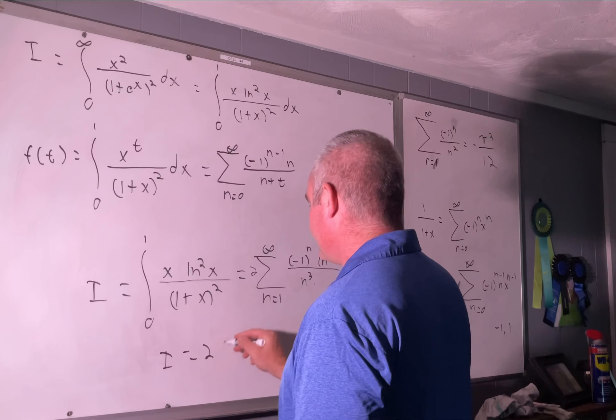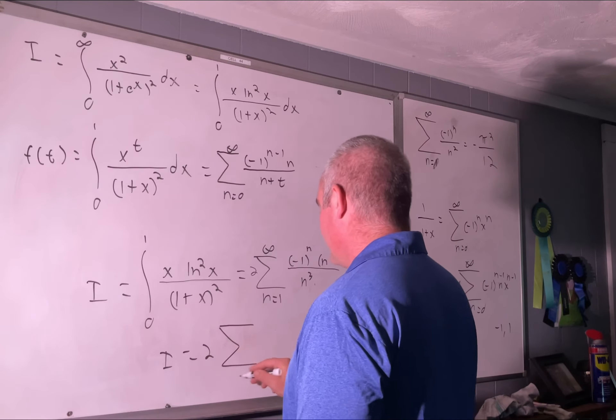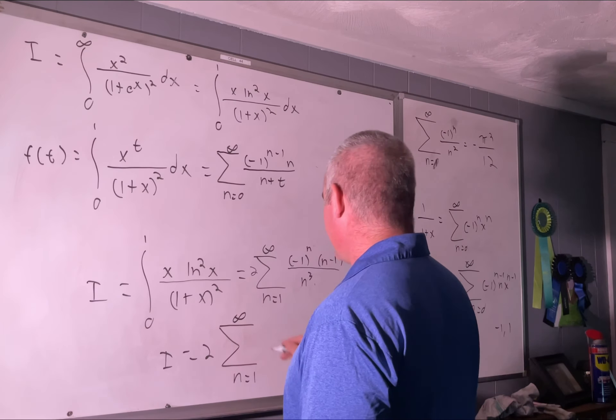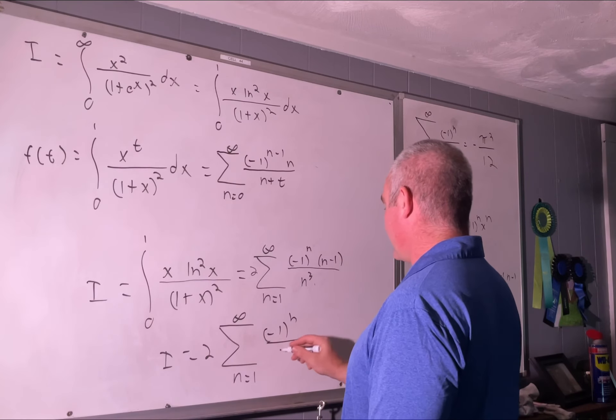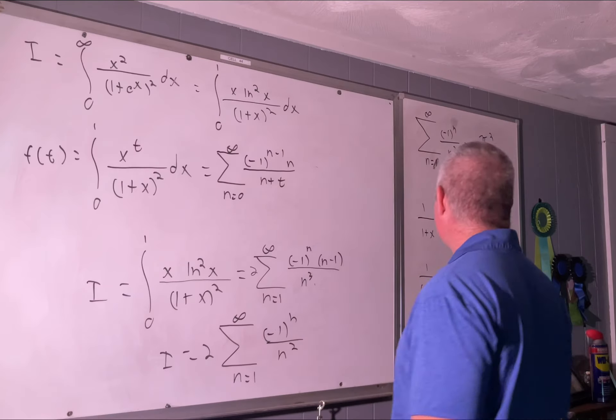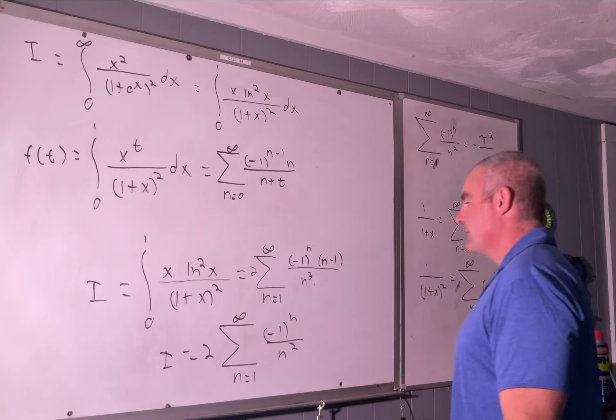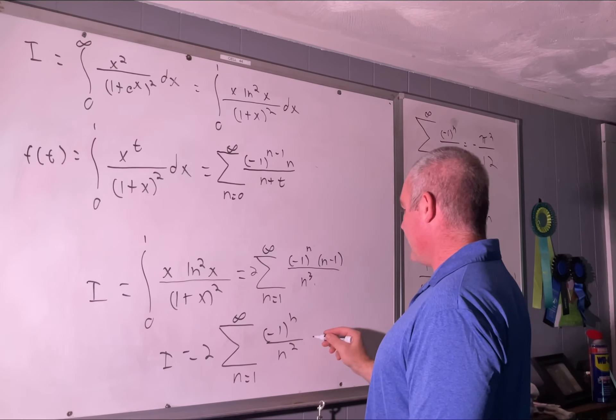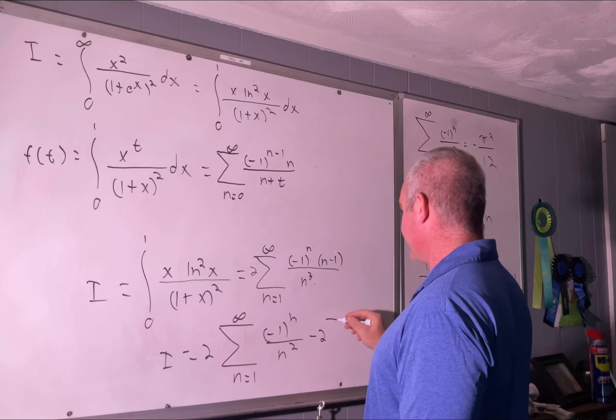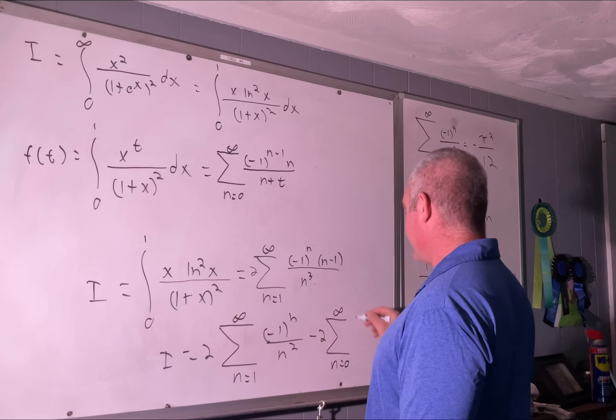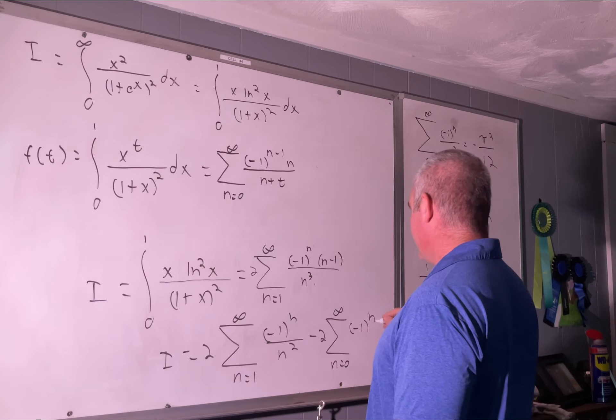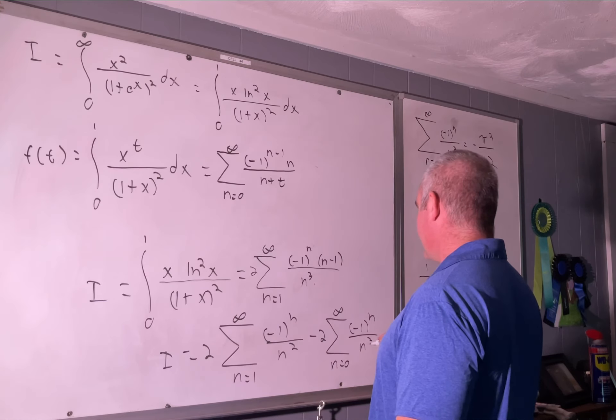Now let's break this up into two separate sums, so I equals 2 times the sum from n=1 to infinity of (-1)^n over n². Aha, look at that! And then we're going to have minus 2 times the sum from n=0 to infinity of (-1)^n over n³.